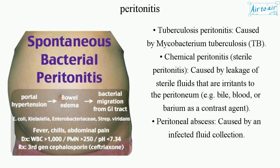Tuberculosis peritonitis is caused by Mycobacterium tuberculosis. Chemical peritonitis is sterile peritonitis caused by leakage of sterile fluids that are irritants to the peritoneum, such as bile, blood, or barium as a contrast agent. Peritoneal abscess is caused by an infected fluid collection.